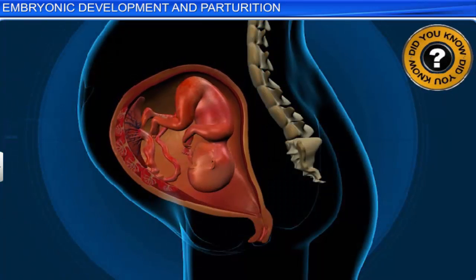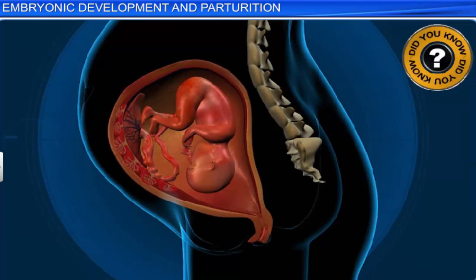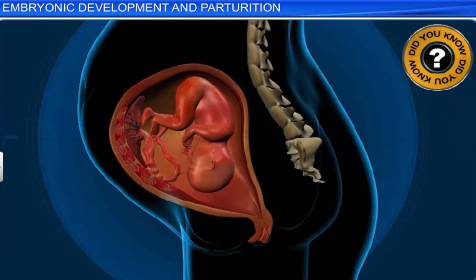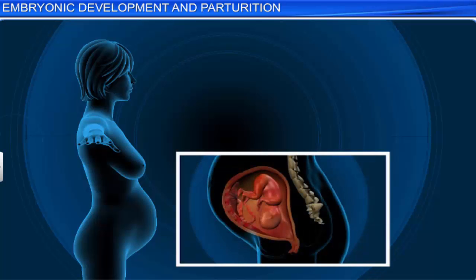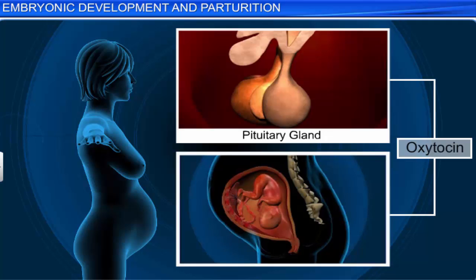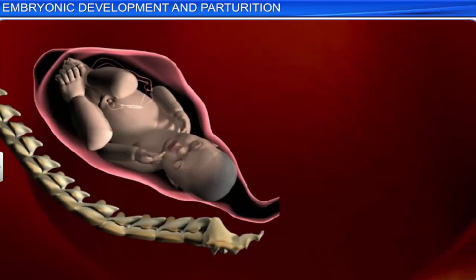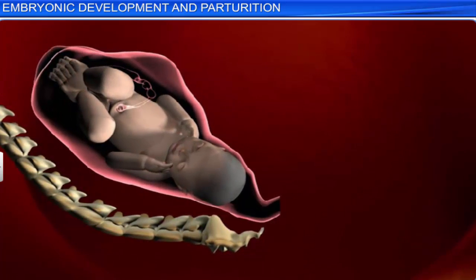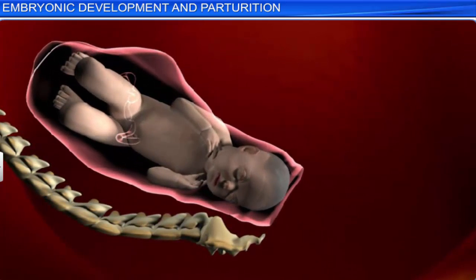Did you know that at the end of the gestation period, the fetus as well as the placenta starts secreting hormones that set in motion mild uterine contractions, called the fetal ejection reflex? These contractions in turn act on the mother's pituitary gland, that now starts secreting oxytocin, a hormone that causes stronger uterine contractions. The simultaneous uterine contractions and oxytocin release makes the contractions stronger with every passing minute, and ultimately results in the expulsion of the baby from the mother's uterus.